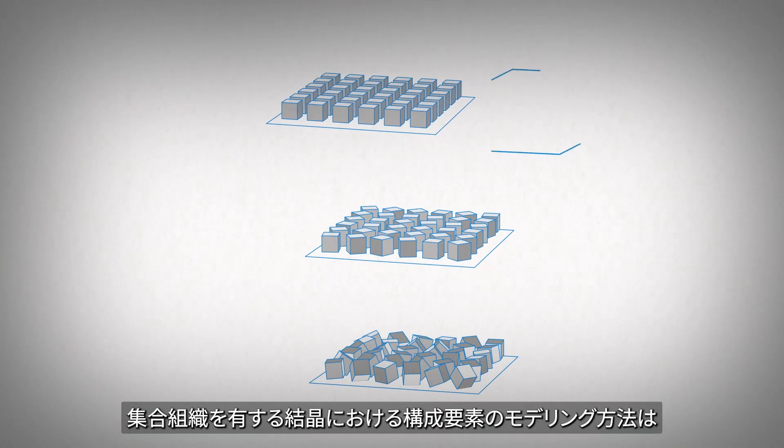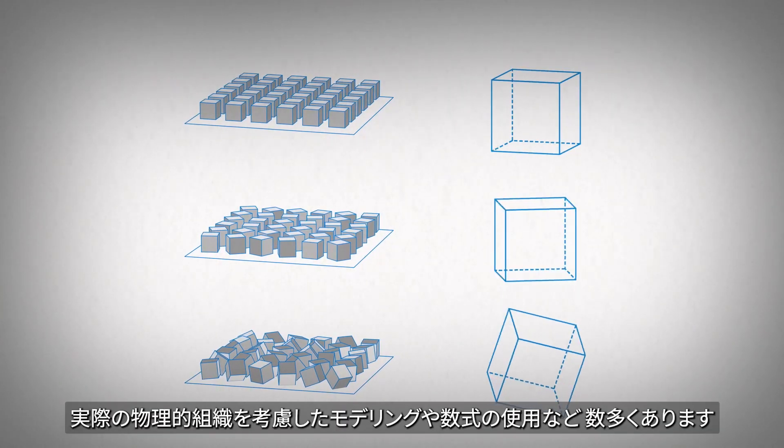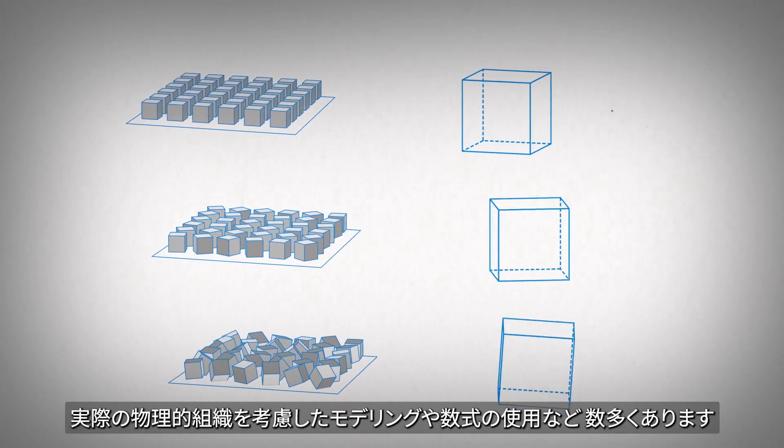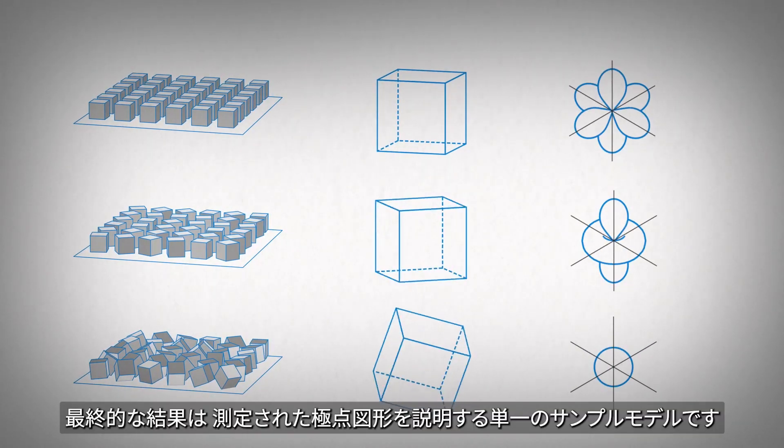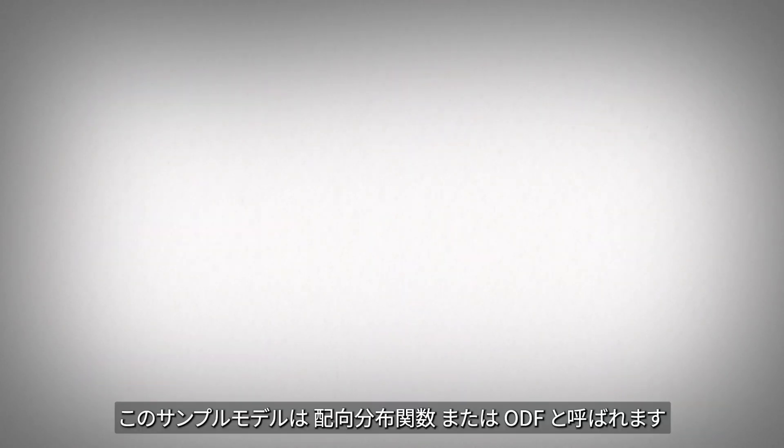There are many ways to model the crystalline components of a texture, including modeling an actual physical texture or using a series of mathematical equations. The end result is a single sample model which explains the measured pole figures. This sample model is called the orientation distribution function or ODF.